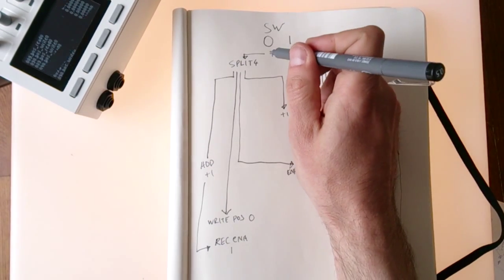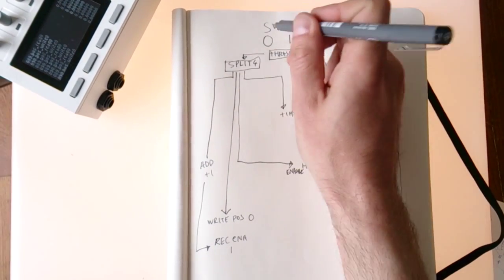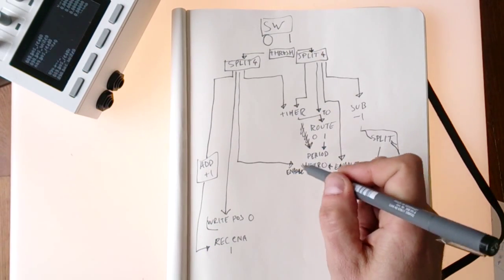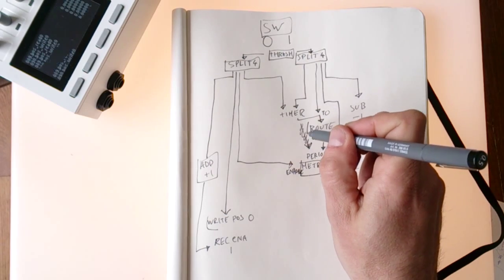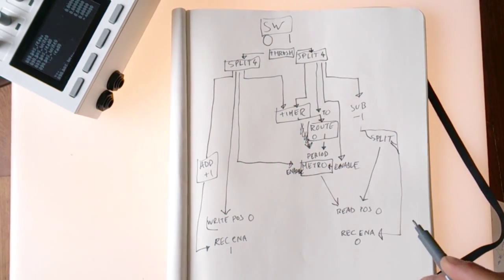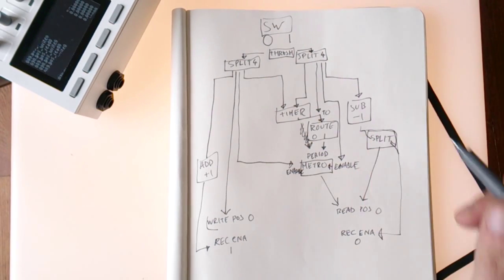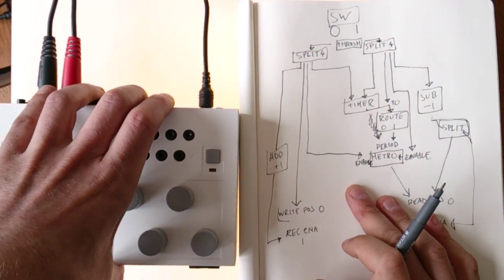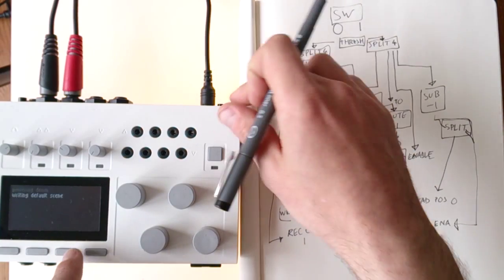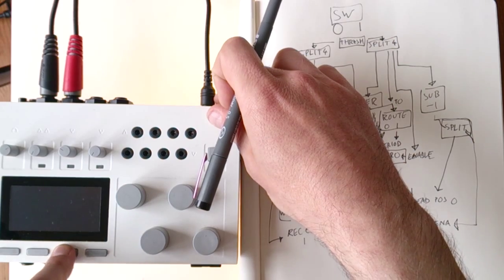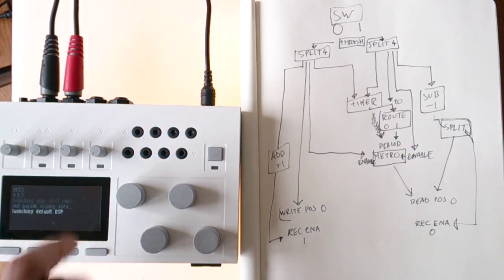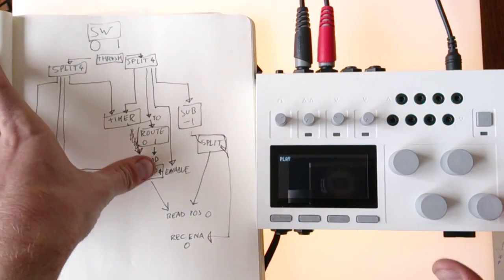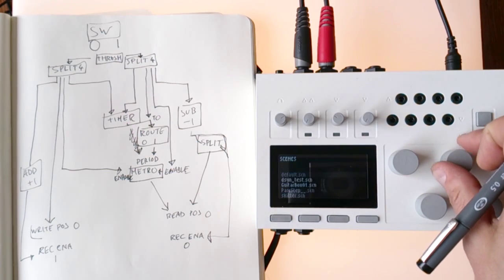That's what initially seems like quite a complex network but it's not so bad. I put squares around all the operators I need: the metro is an operator, the route is an operator, the timer is an operator, the split is an operator, and the sub is an operator. Now we've got our network diagram, so it's time to get the device up. Let's turn it off, start a clean boot, and load up the lines module.